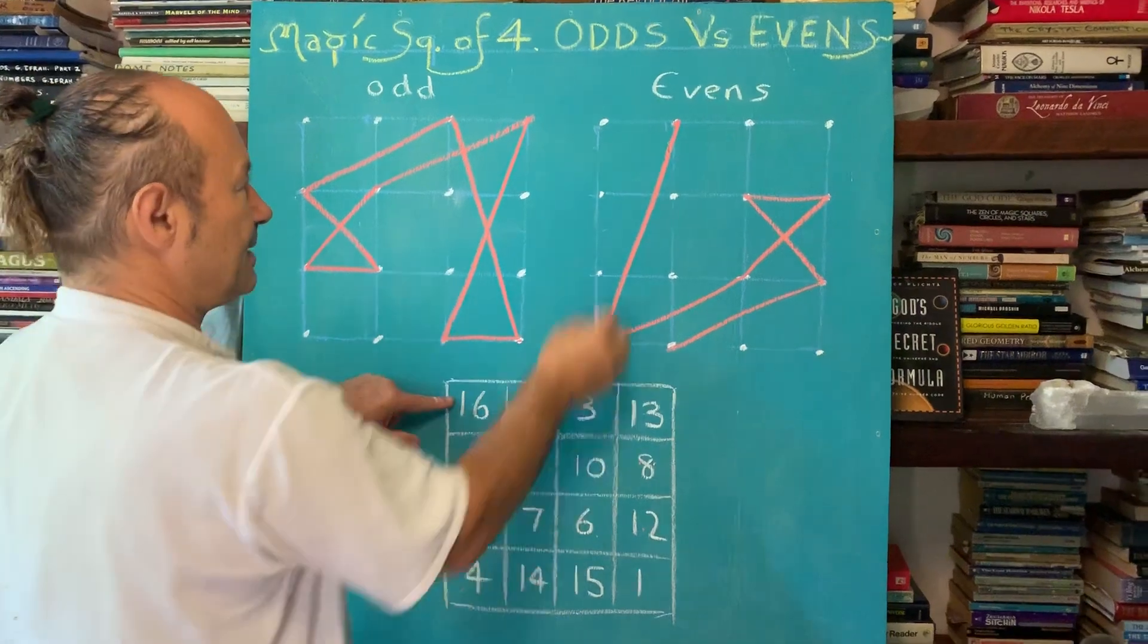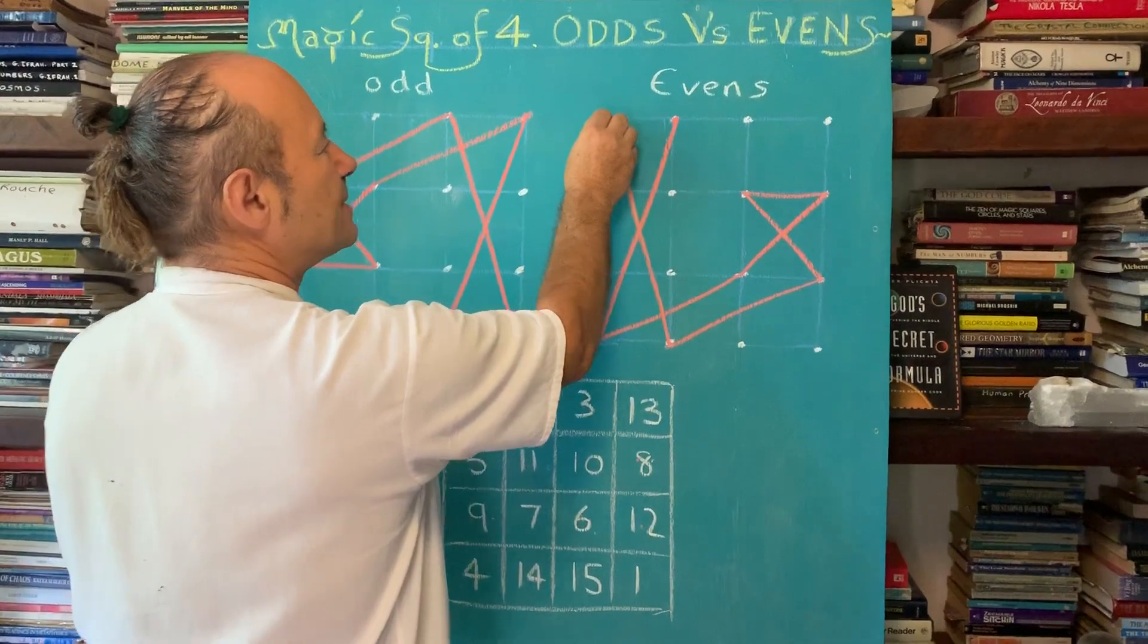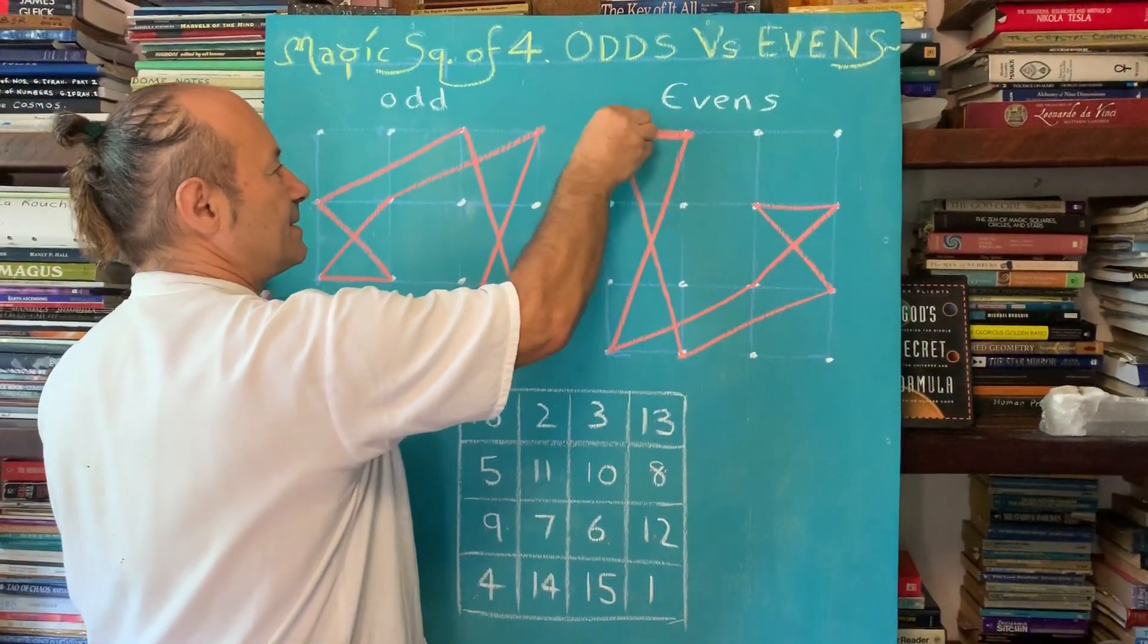And the last number 16 is up the top. And like I said before, we're going to close the circuit, 16 back to 1.